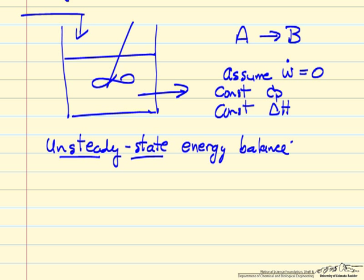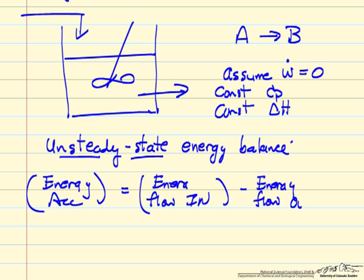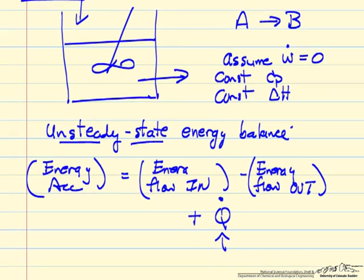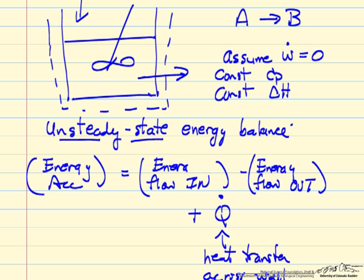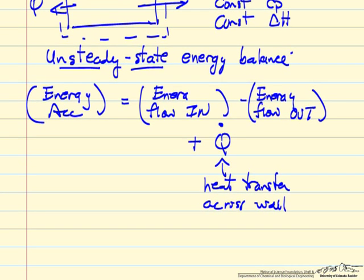The energy balance from the first law says the accumulation of energy in the reactor is due to energy flowing in and energy flowing out. The change is also due to the rate of heat being added — heat transfer across the walls, such as a heating or cooling jacket transferring heat into or out of the reactor. Notice there's no heat of reaction term; that's taken into account in these energy flow terms.